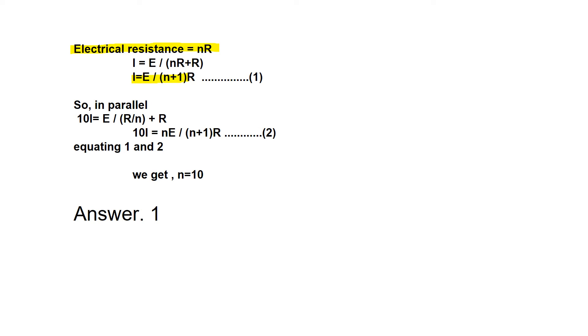Now when resistors are connected in parallel with the battery, current becomes 10I. So 10I equals E upon (R/N + R). That is, 10I equals E upon R/N plus internal resistance R.